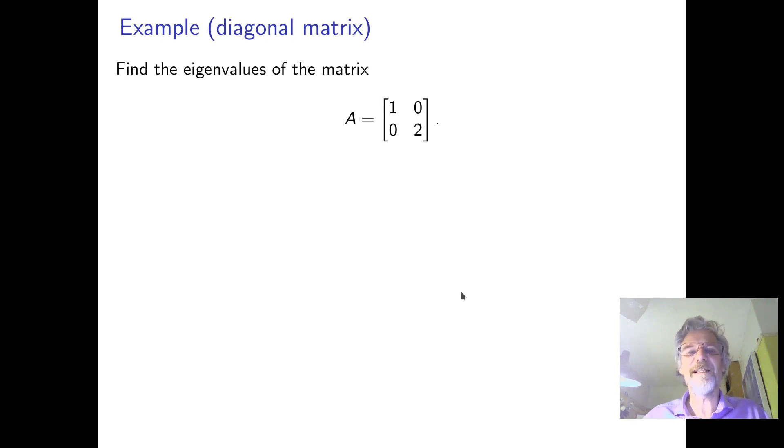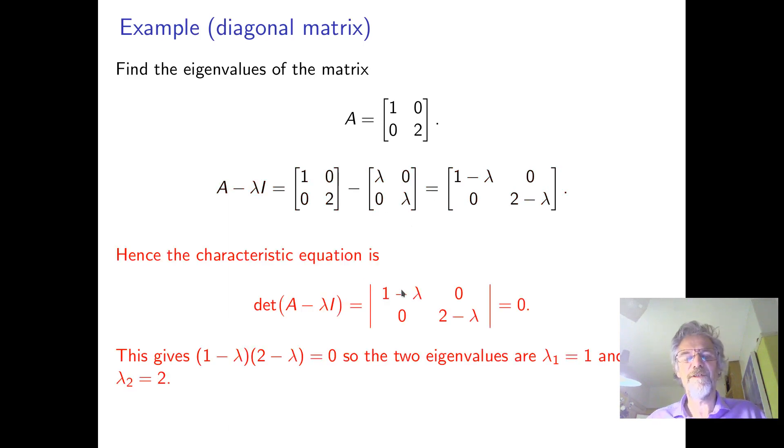Okay, so let's do a little example. Find the eigenvalues of this matrix. Well, it should be easy. It's diagonal and you could almost guess. What we do is we form A minus Lambda times the identity, which means we just subtract the Lambda from the diagonals. And then we write down the characteristic equation, which is the determinant of A minus Lambda i. And in this case, it's easy. It's one minus Lambda times two minus Lambda equals zero. So the eigenvalues are just one and two.